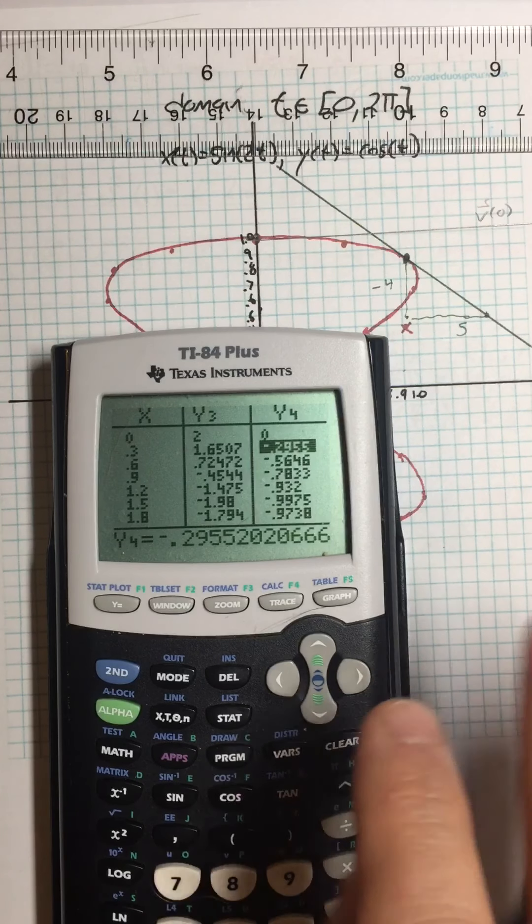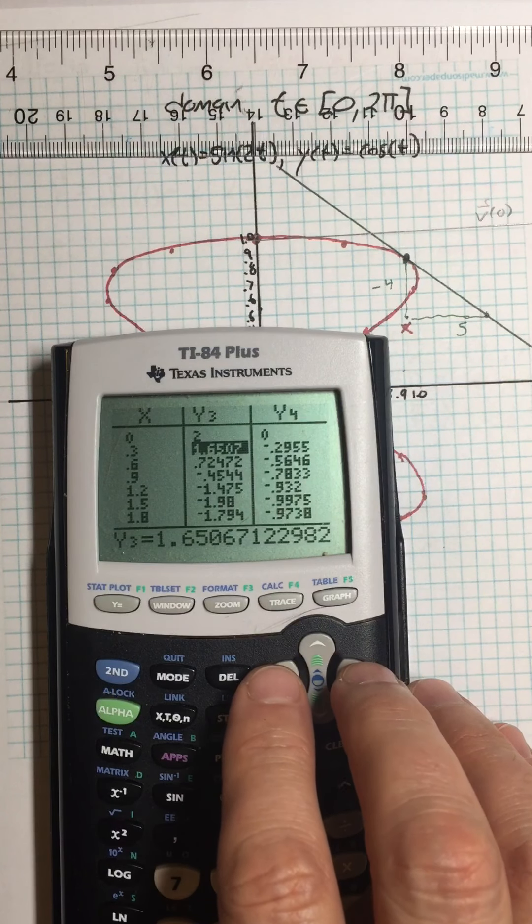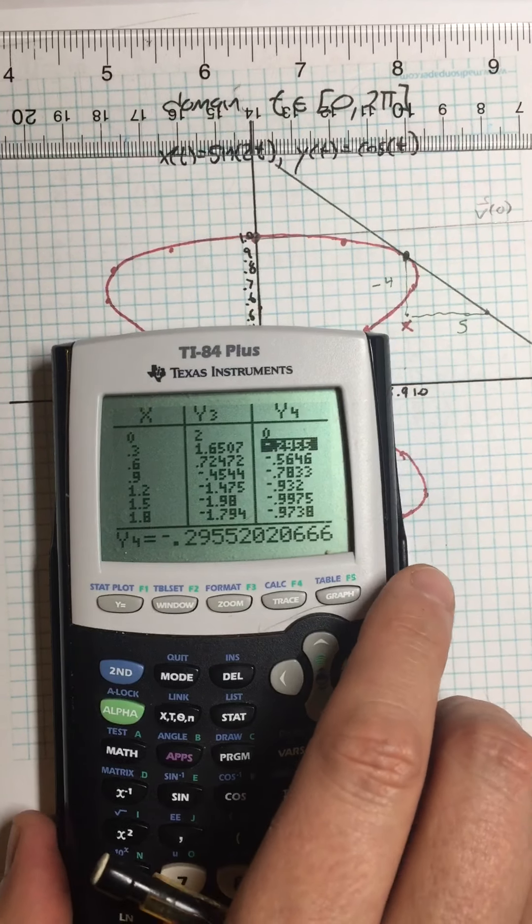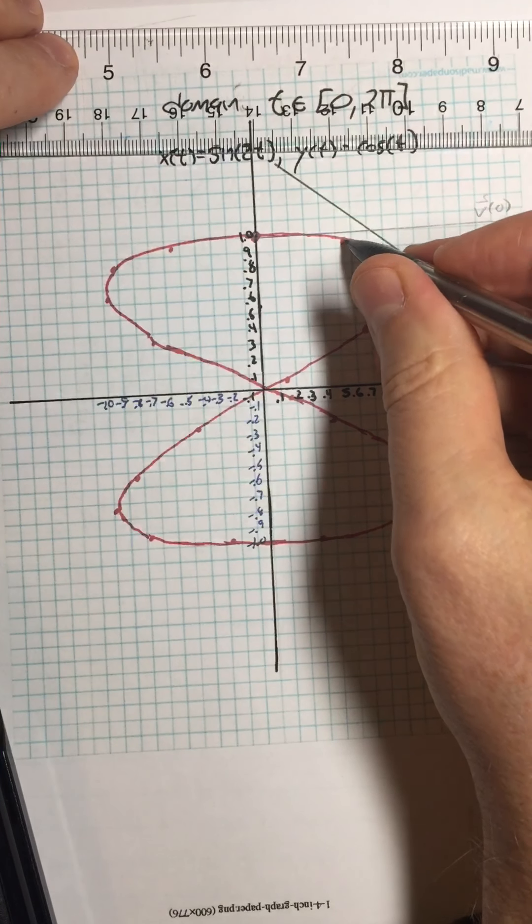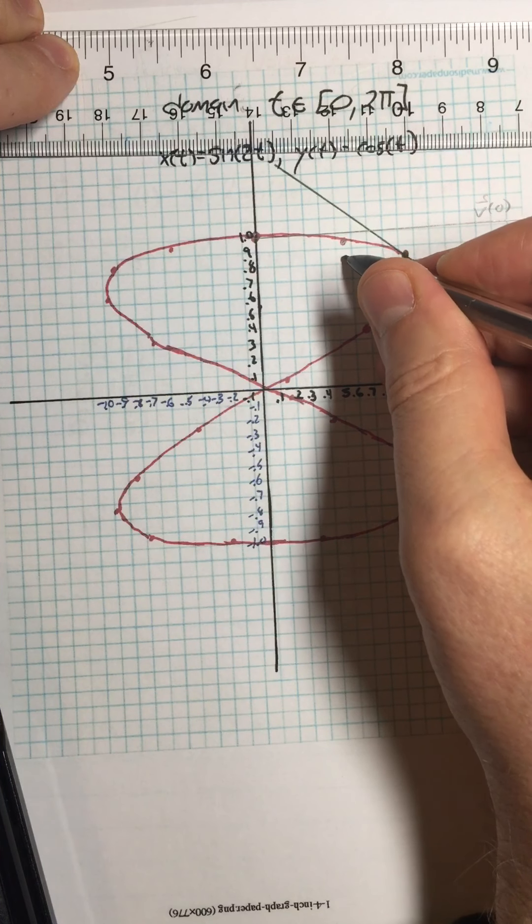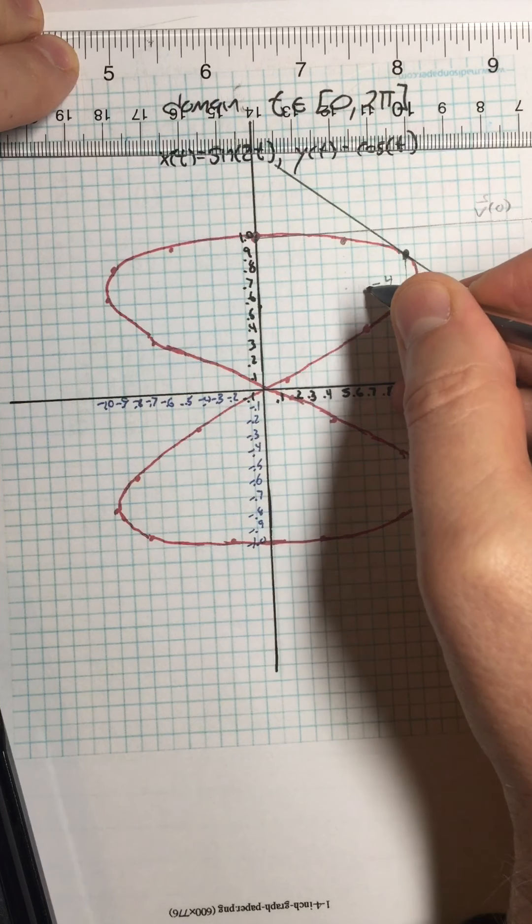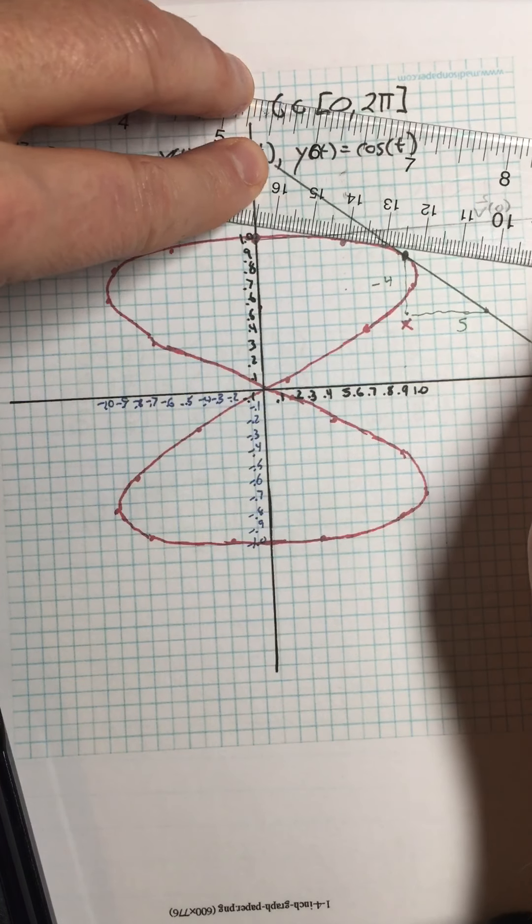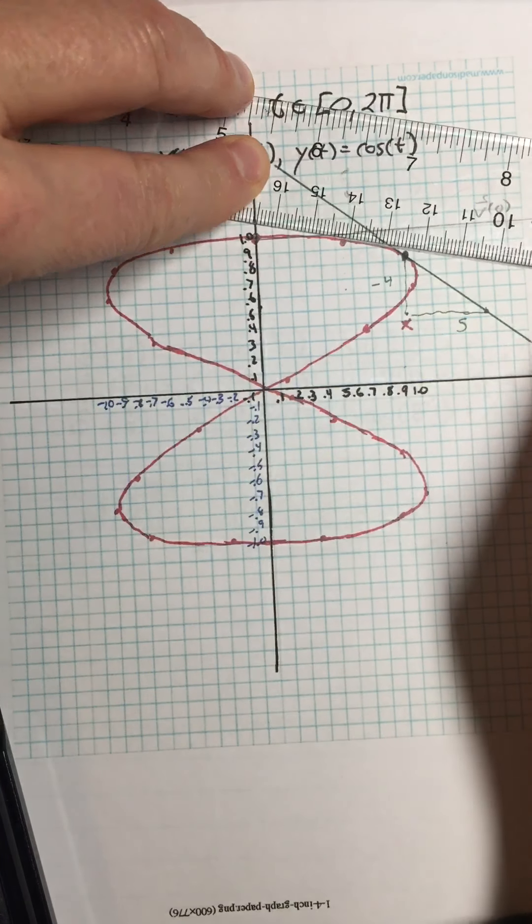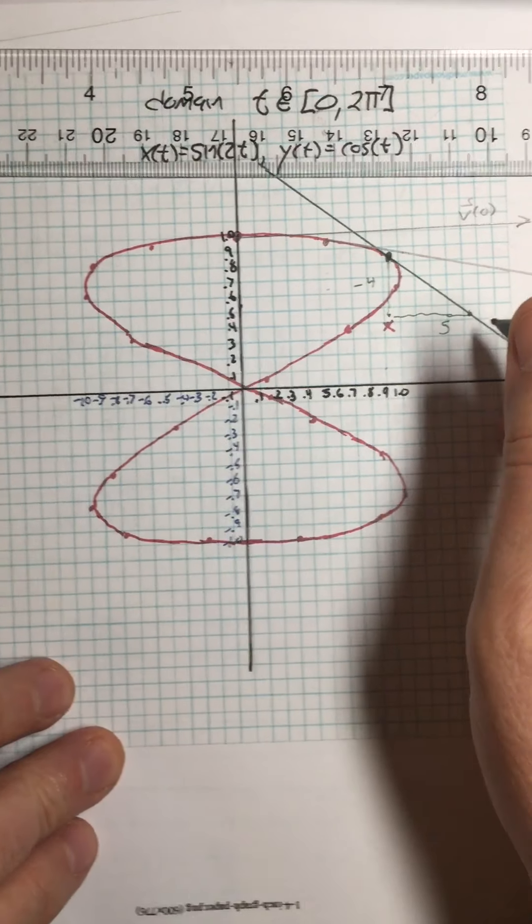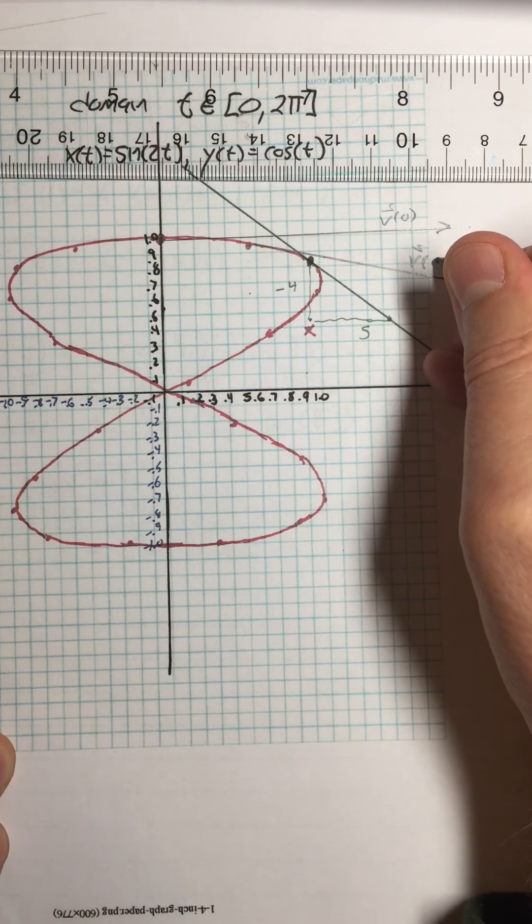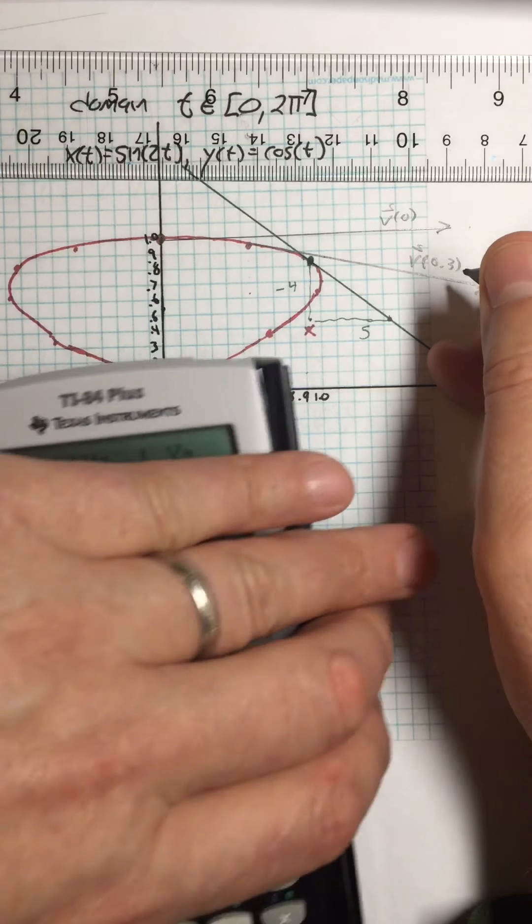Alright, then what happens when I get to 0.3? I have 1.6507, I don't know how exact I want to be, but I have negative 0.3. So from here, the y component is negative 0.3, so 1, 2, 3, and then it's like 1.65, I don't know, somewhere over here, somewhere. I'm not being terribly exact, but here's my next velocity vector. So see how it's curving down? The velocity vector is curving down as I go along. So this is velocity at 0.3, and then I can sort of keep doing that.